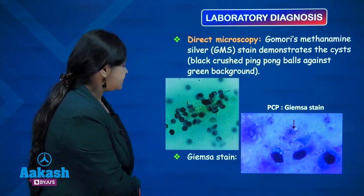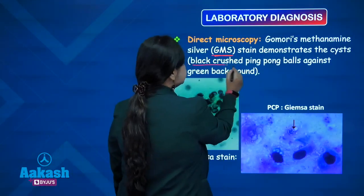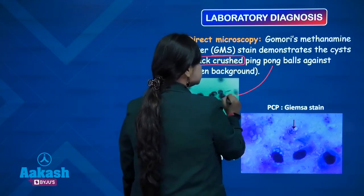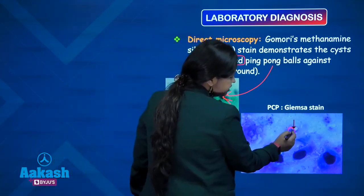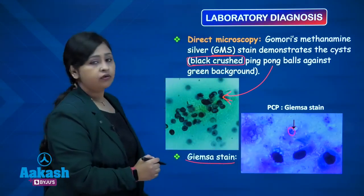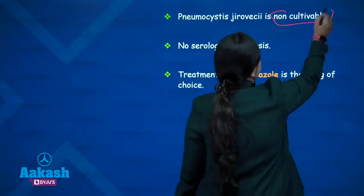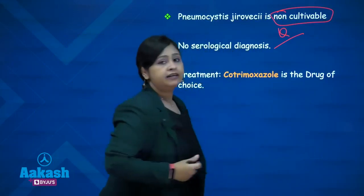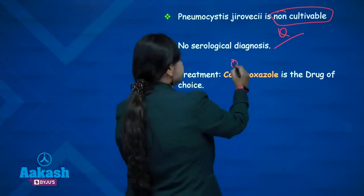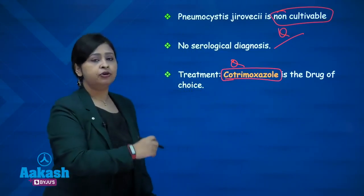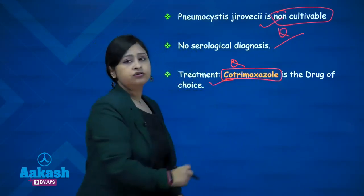On laboratory diagnosis, GMS stain demonstrates cysts that look like black crushed ping-pong balls against a green background. Giemsa staining shows cysts with eight intracystic bodies. The organism is non-cultivable — it cannot be cultivated in any culture media. There are no serological tests. The drug of choice is cotrimoxazole, a combination of trimethoprim and sulfamethoxazole.